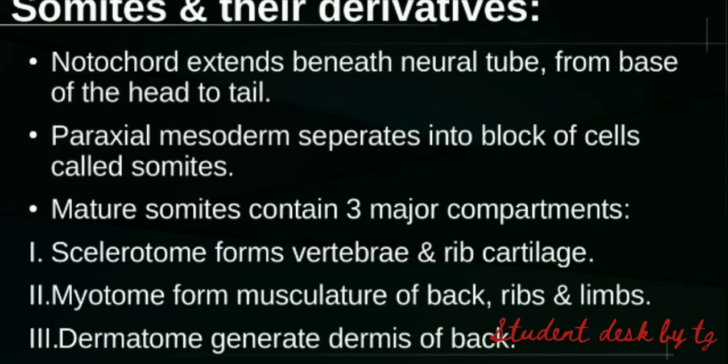The other compartment is called the myotome. The myotome gives rise to the muscles needed to support the back, ribs, and limbs. So the myotome is called the musculature portion, generating muscles of the back, ribs, and limbs.